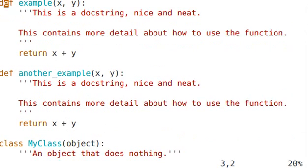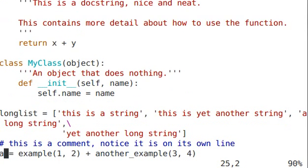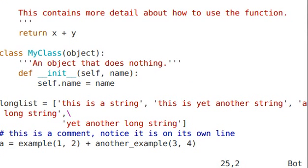Notice that between the definitions that we have here, we have a blank line. Don't overuse blank lines. Just use them between definitions, between classes and definitions, and between sections of your code. But don't put blank spaces between the actual lines of your code unless it really is necessary.